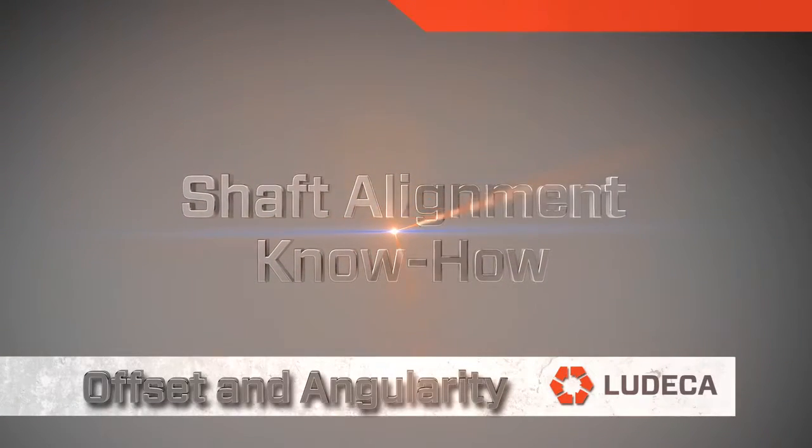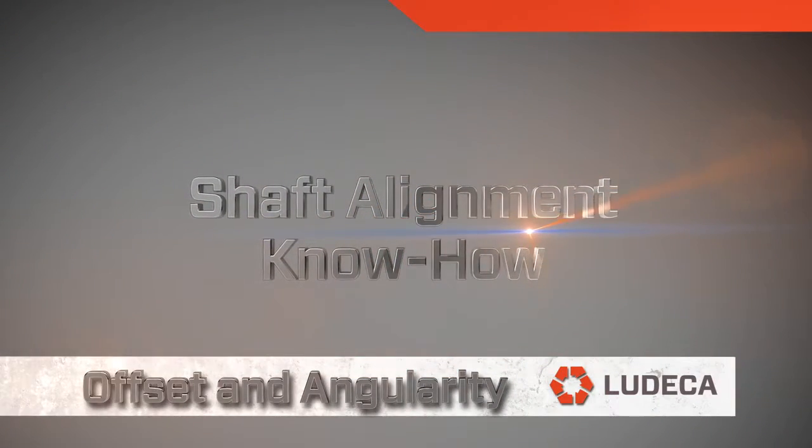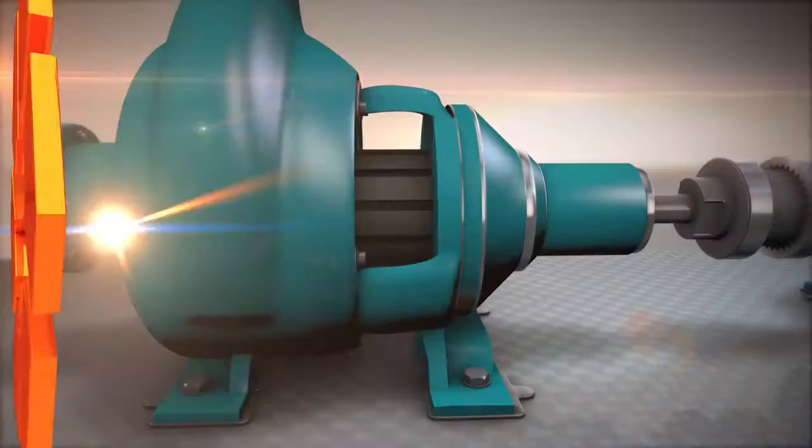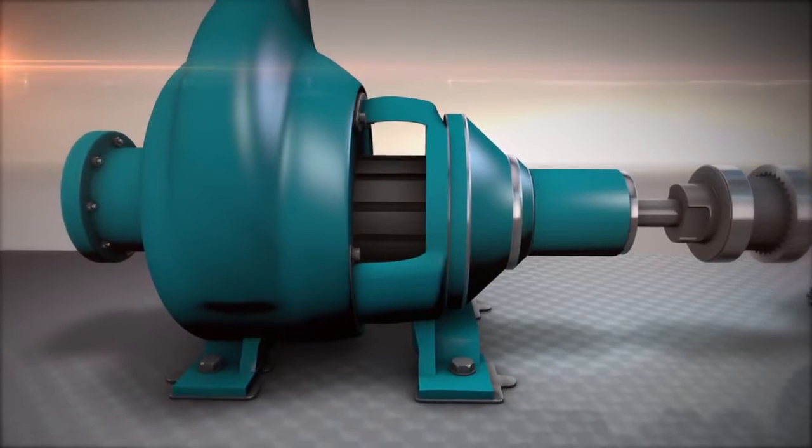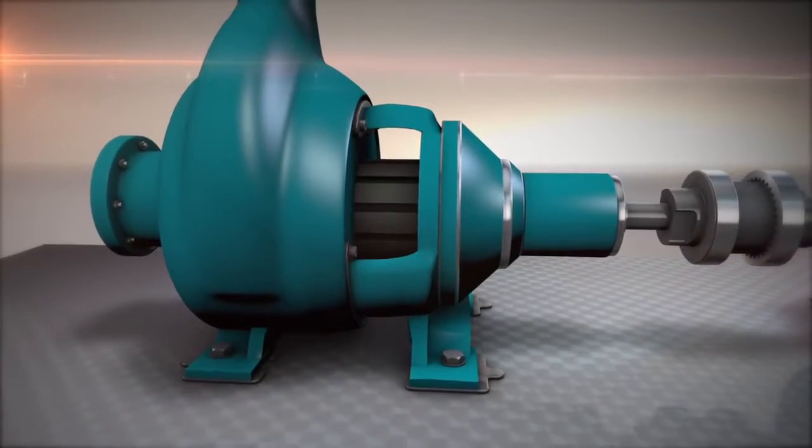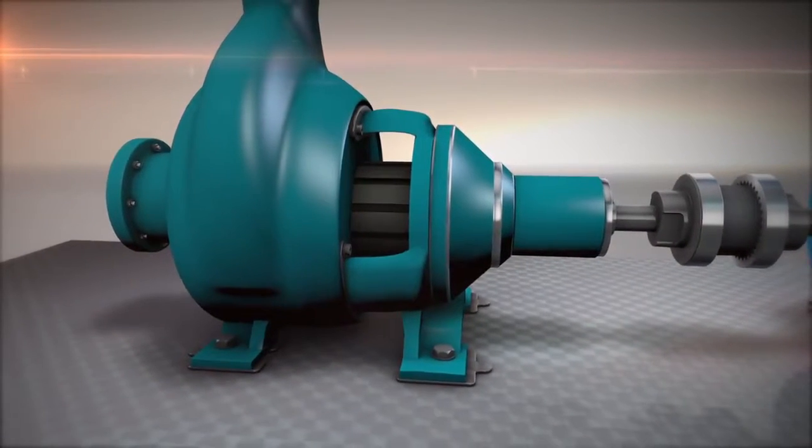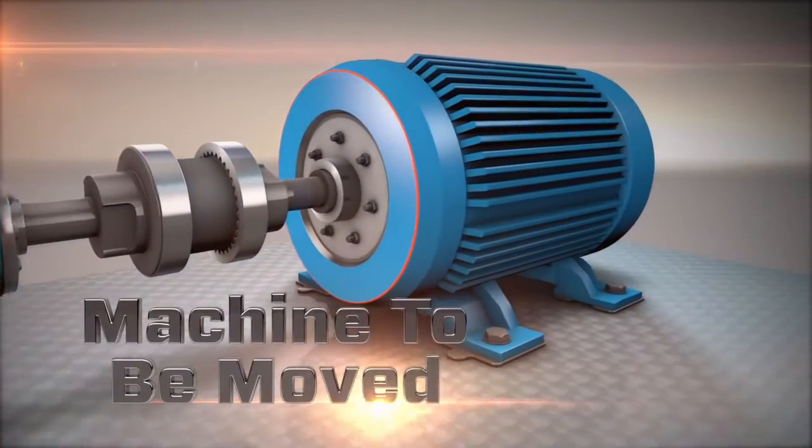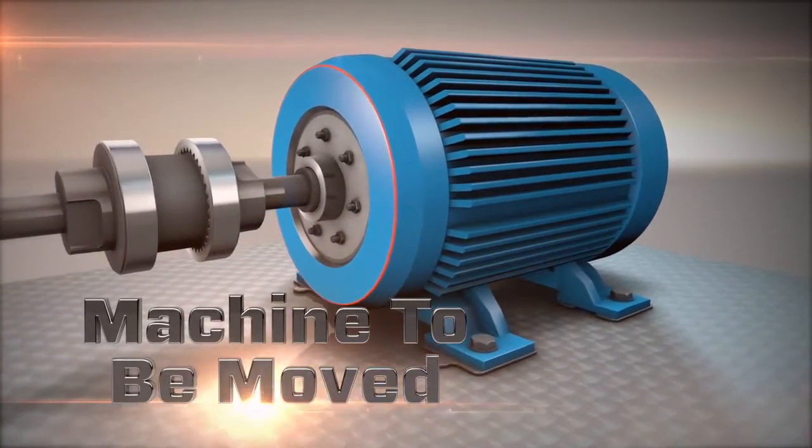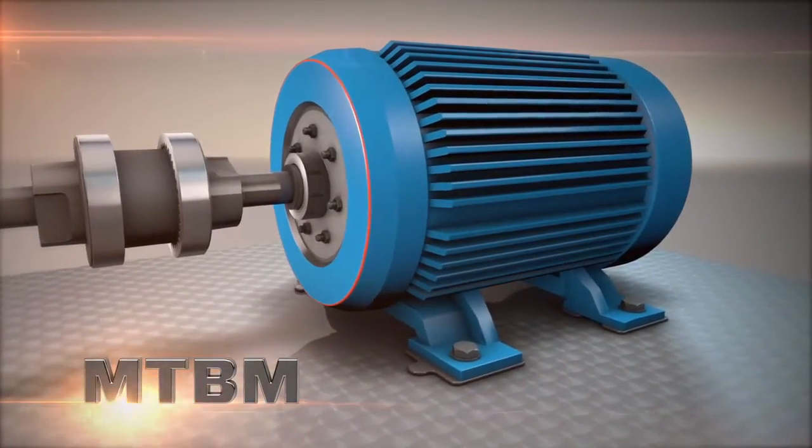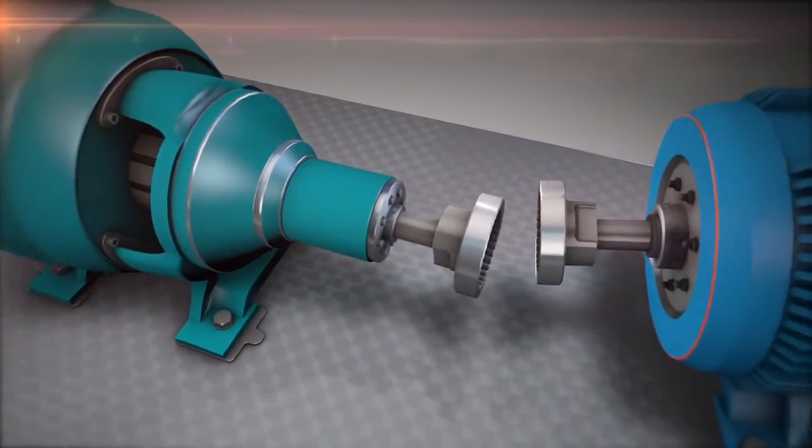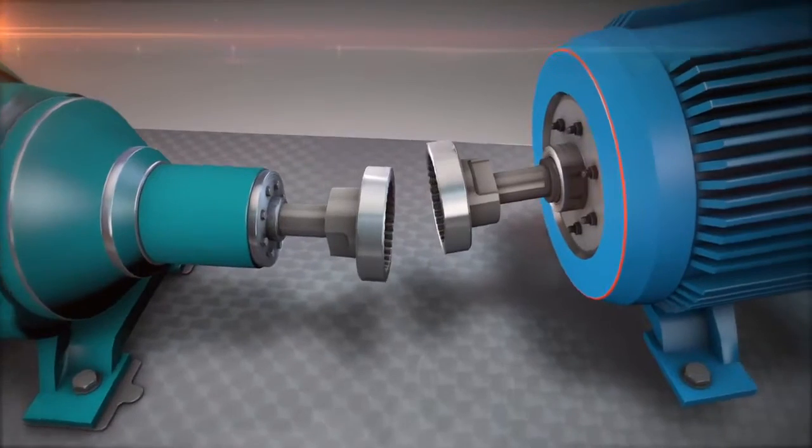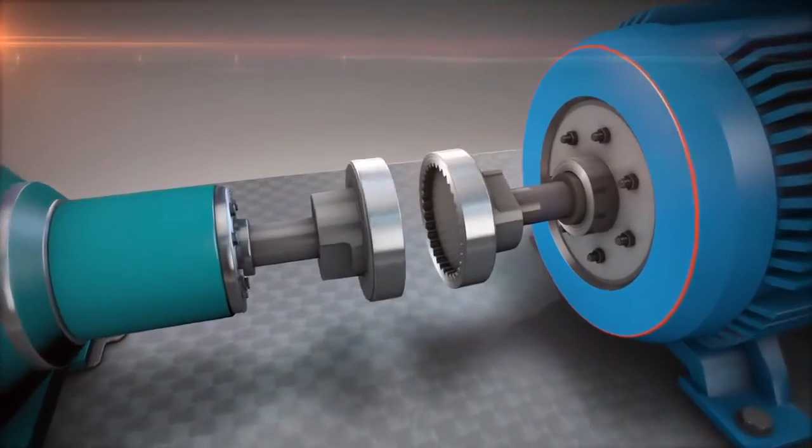Shaft alignment know-how: offset and angularity in shaft alignment. One of the machines is selected to be the reference machine, usually the driven. We call this the stationary machine. The other machine, typically the driver, is considered the machine to be moved. The movable machine is adjusted so that its shaft centerline is aligned to the stationary shaft centerline within predetermined tolerances.